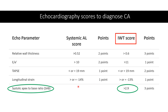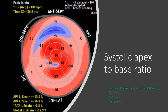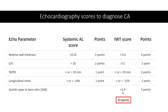The last step in the IWT score is to calculate the systolic apex-to-base ratio — if it's more than 2.9, you get three points. This ratio is calculated by dividing the septal apical systolic strain by the septal basal systolic strain. We took an average and it was 3.7, which is more than 2.9, again reproducing the characteristic feature of apical sparing in cardiac amyloidosis.